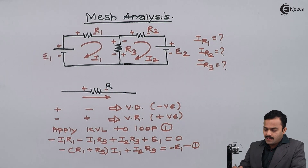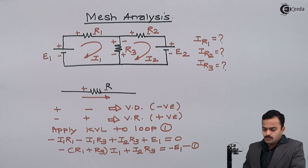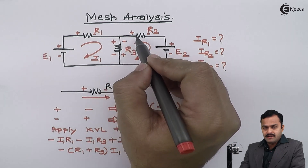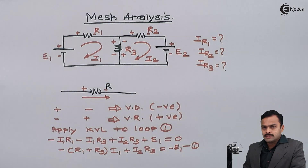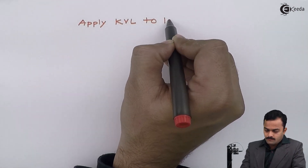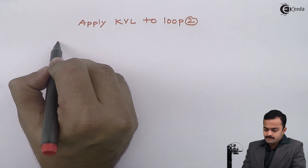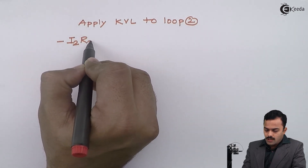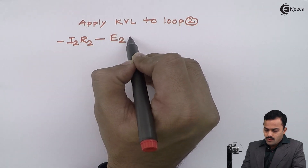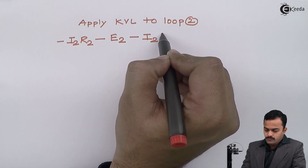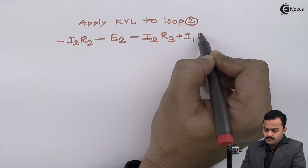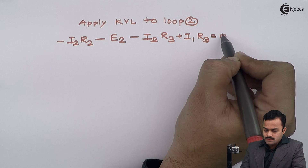Similarly, I apply KVL to loop 2. Starting from a point and tracing back, I get: minus I2·R2, minus E2, minus I2·R3, plus I1·R3 = 0.